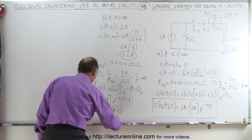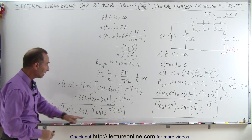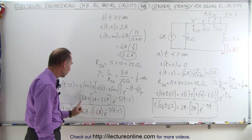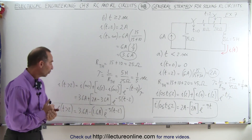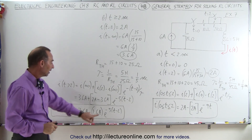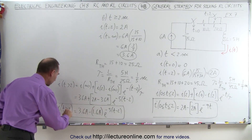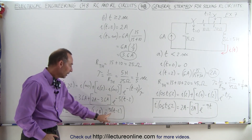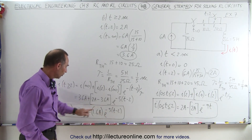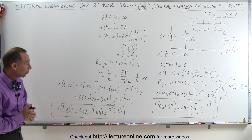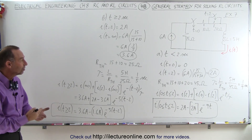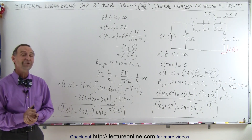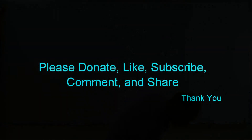To verify this is correct, we plug in time equals 2: two minus two is zero, e to the zero is 1, so 3.6 minus 1.6 gives 2 amps — the correct value for the current at time equals two seconds. And when time is a very large number, e to the minus very large number goes to zero, and we end up with 3.6 amps, which is the total current at steady state after the second switch closes. And that's how we figured it all out. Thank you.